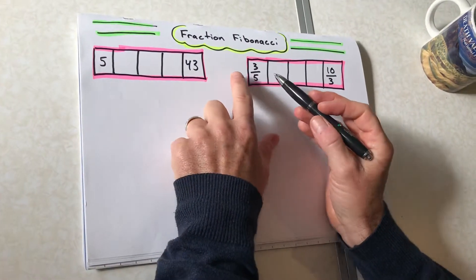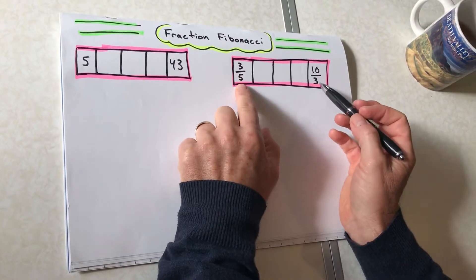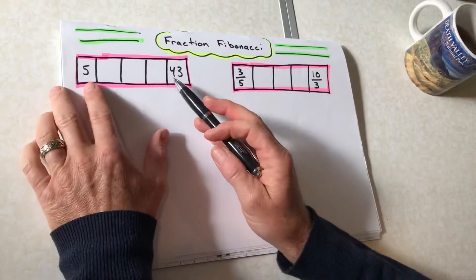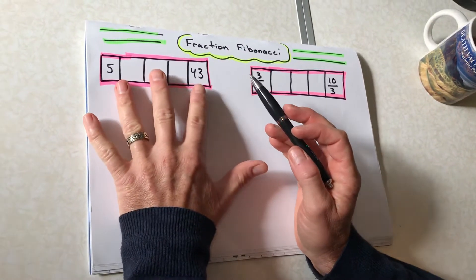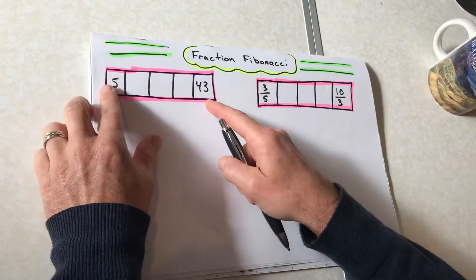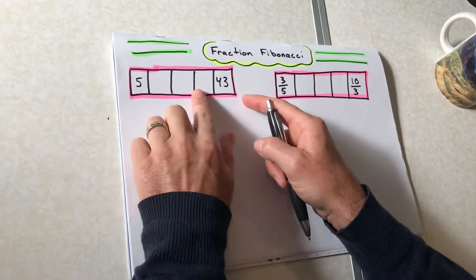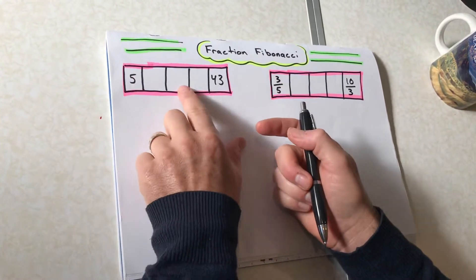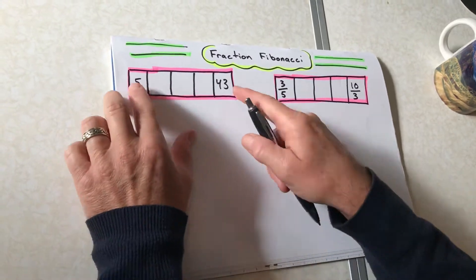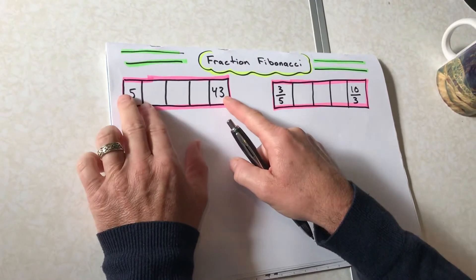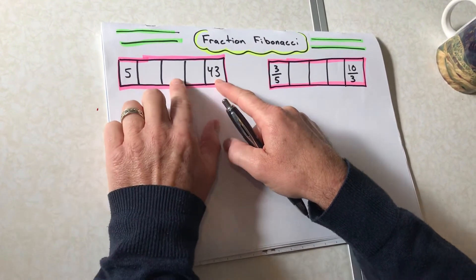So what we're gonna do today is we're gonna do some Fibonacci sequences with fractions. And first step, I'll just show you how to do, when you have a sequence of five Fibonacci numbers, we know that if we want to complete this, and if we don't know Fibonacci is each number is the sum of the previous two, if we wanna find that middle number of a sequence of five, we add these two and divide by three.